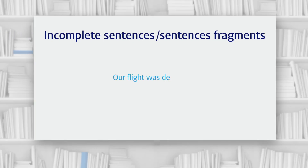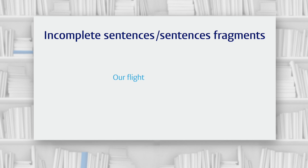Your tutor might tell you that a sentence you've written is incomplete or that it's a sentence fragment. But what makes a sentence complete or incomplete? Take a look at this sentence: 'Our flight was delayed.' In English, a complete sentence has at least a subject and a verb or verb phrase. Here, 'our flight' is the subject and 'was delayed' is the verb phrase. That means that 'our flight' alone is not a full sentence, nor is 'was delayed.' We need both the subject and the verb or verb phrase to make the sentence full.